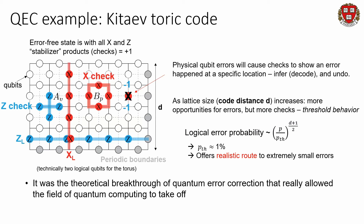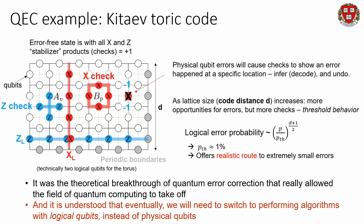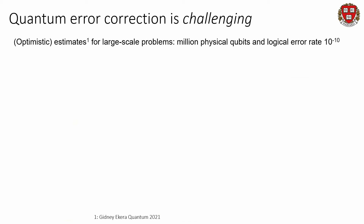It was this theoretical breakthrough — quantum error correction — that really allowed the field of quantum computing to take off. Although we've learned a tremendous amount from experimenting with physical qubits and doing small-scale quantum algorithms, it has been understood that we will eventually need to switch to performing our algorithms with logical qubits instead of physical qubits. There are significant challenges: estimates for large-scale problems often imagine millions of physical qubits to get logical errors on the scale of 10^-10, which is a lot of qubits to control.